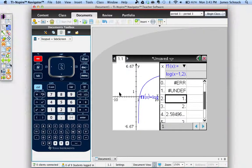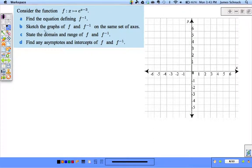Let's go to another example. Here we're graphing an exponential. Find the equation defining f inverse, sketch f and f inverse on the same axes, state the domain and range of both, find the asymptotes and intercepts of both.